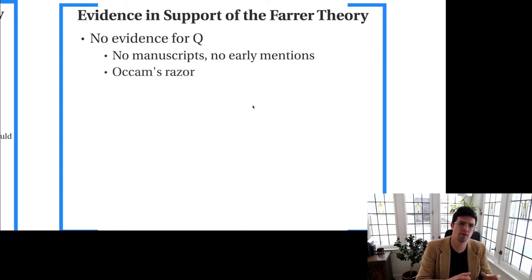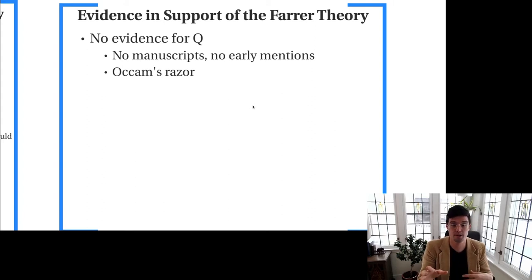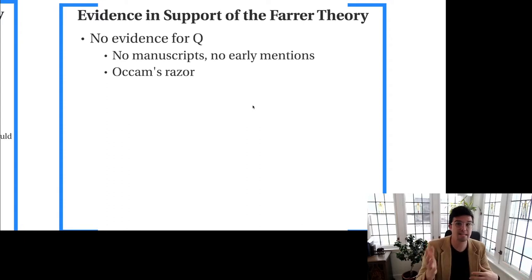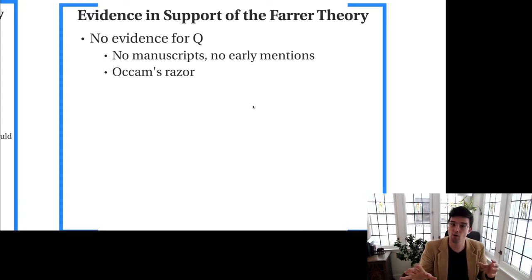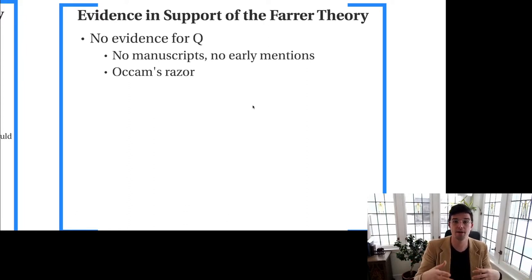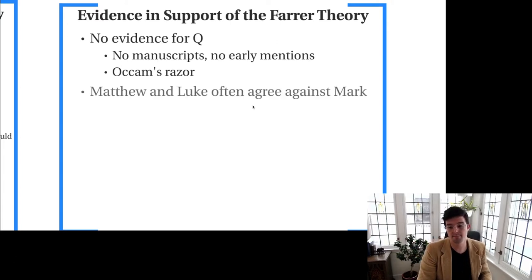The thinking goes, then, that the simplest solution — Occam's razor — says the simplest solution is best. If we don't have evidence for Q, the best explanation is that Q did not exist, and that the overlap between Matthew and Luke can best be explained by the simplest solution: namely, that one was looking at the other. For Farrer theorists, it's that Luke was looking at Matthew.